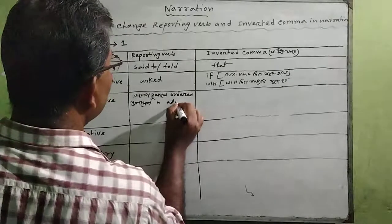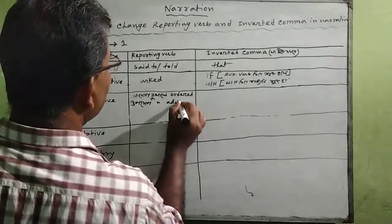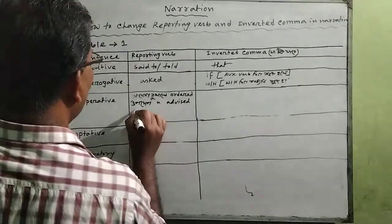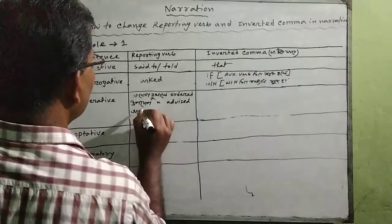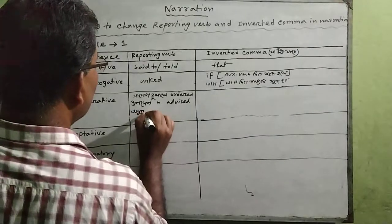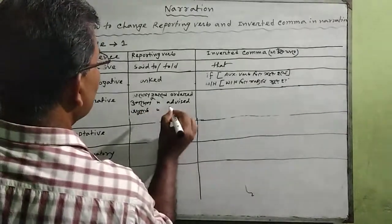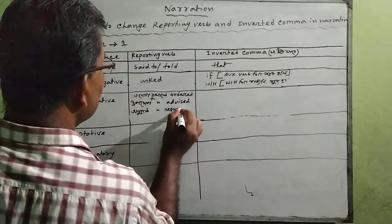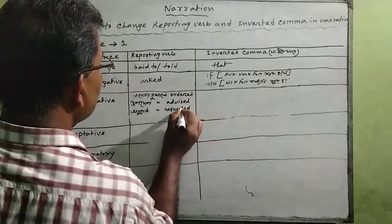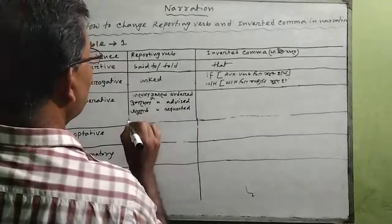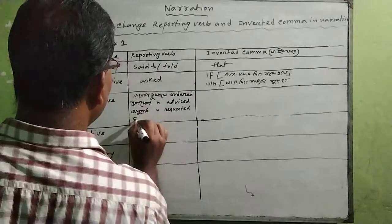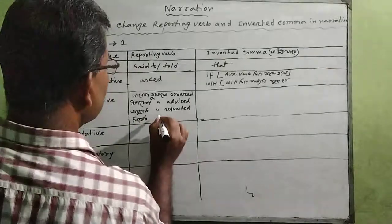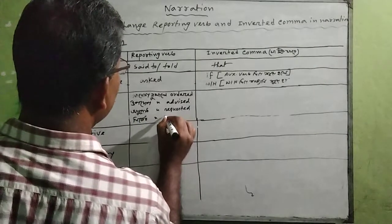In imperative sentences, reporting verbs like 'advised,' 'requested,' and 'forbade' are used depending on the context of the sentence.